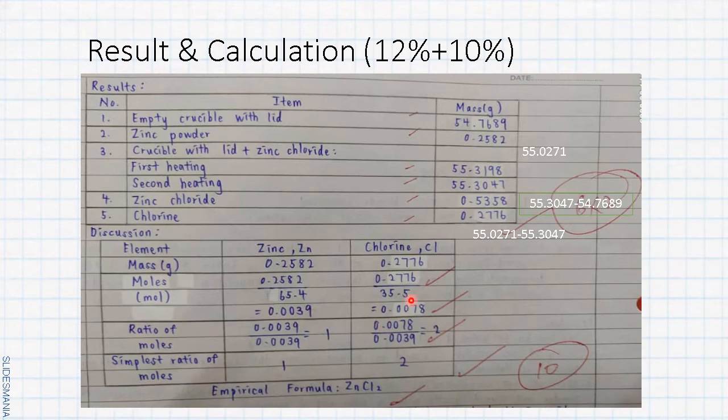Compare these two, which one has the smaller number of moles? The answer is zinc. So we compare to find the ratio of moles by comparing with the zinc element. Zinc will get one and chlorine will get two. So the simplest ratio of moles is 1:2, so the empirical formula is ZnCl2. From here there are five steps, each step equals two marks. Six correct answers will get two marks each, so total: result 12 marks and calculation 10 marks.